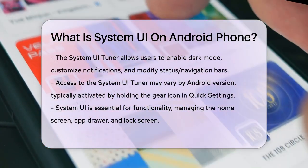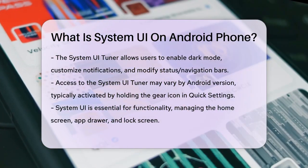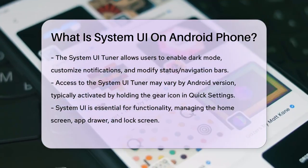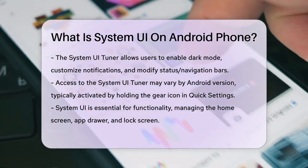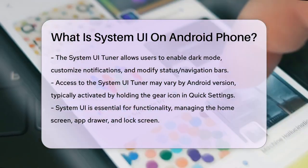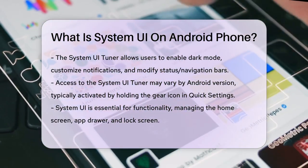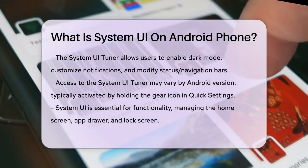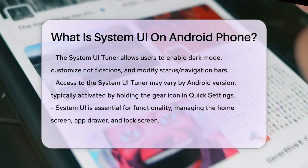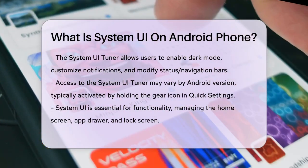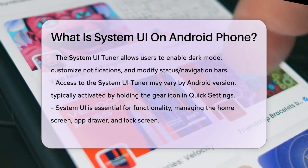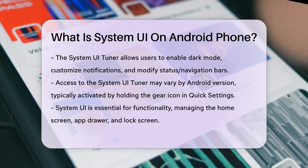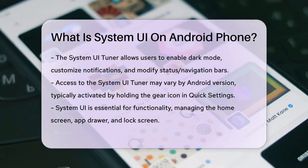System UI is crucial for your device's functionality. It handles the home screen, app drawer, and even the lock screen. Without it, your phone wouldn't be able to display the necessary information and controls that you use every day.